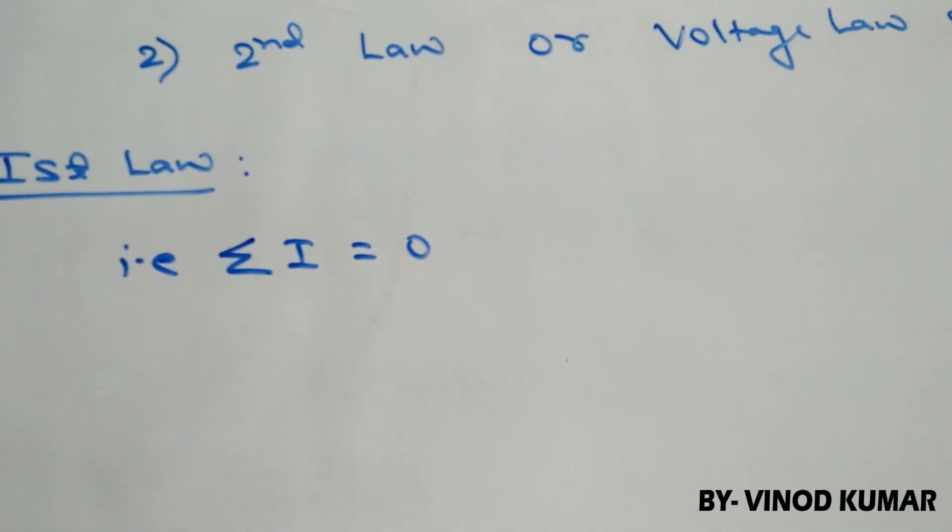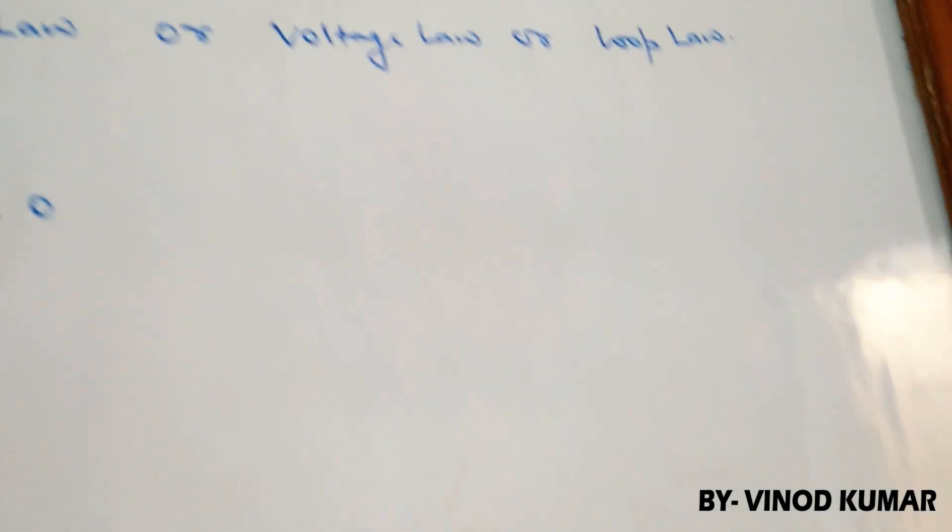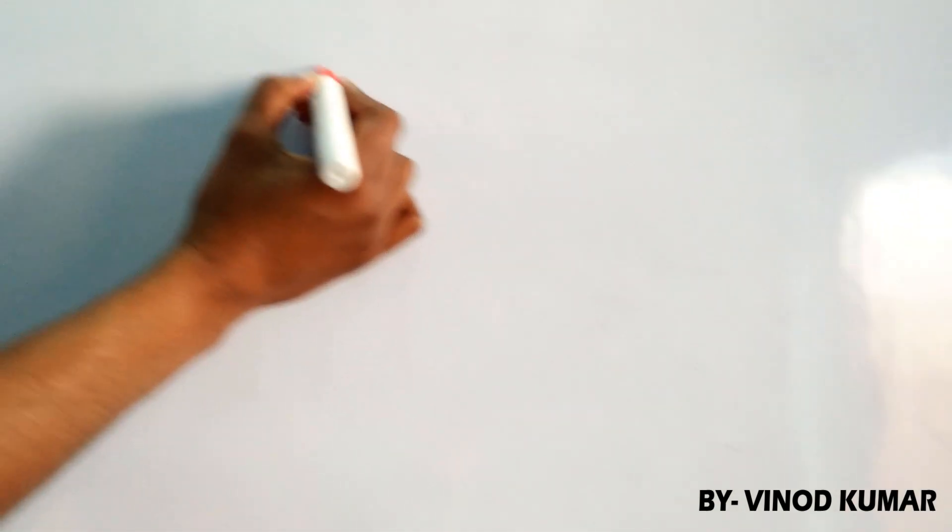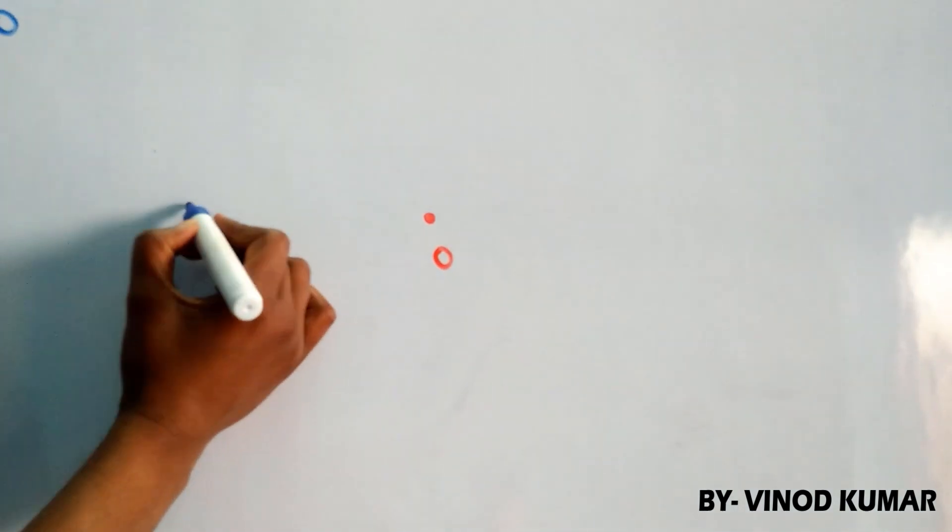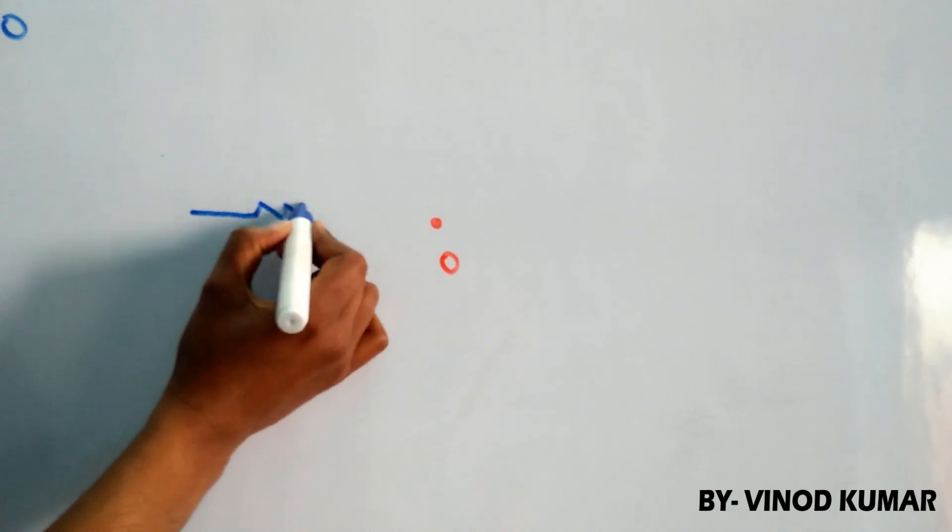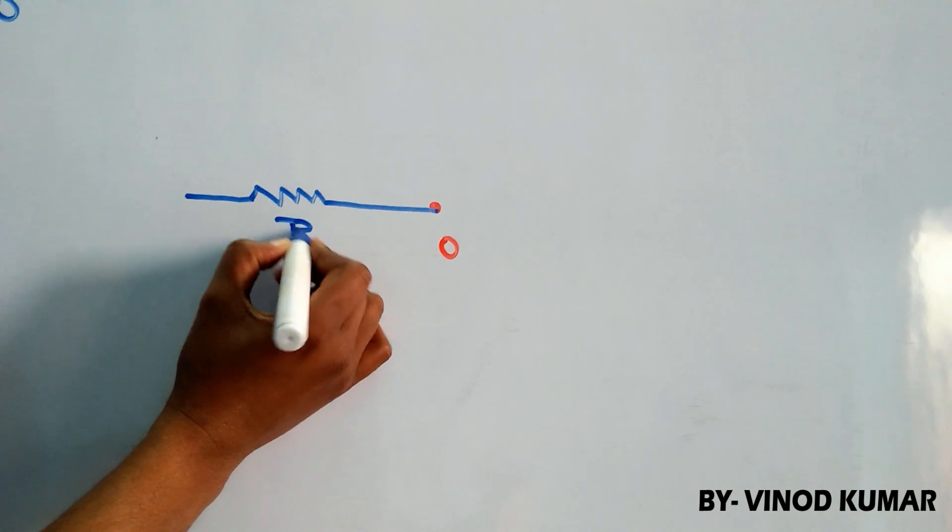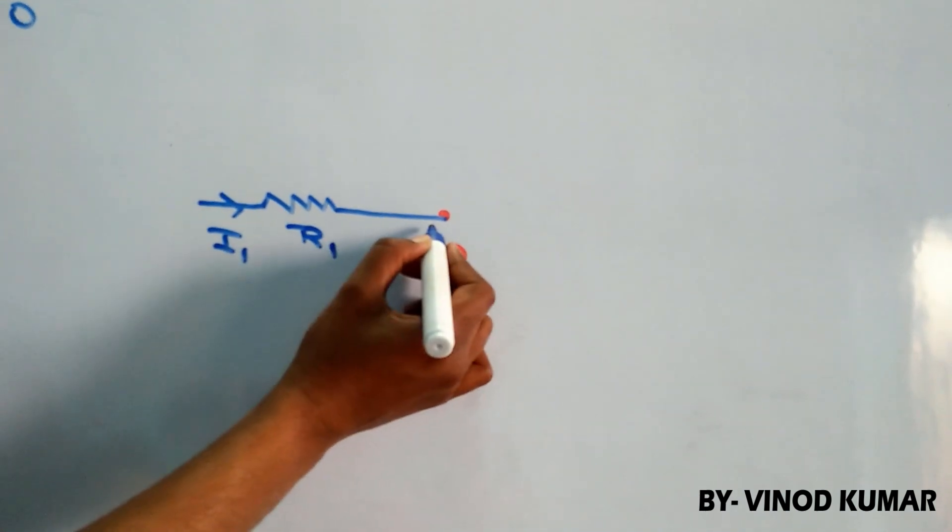Let us see. I am just taking an example to clear this law. I will first draw a simple electrical circuit. This point O is called a junction from where different branches are there. Suppose this one is R1 resistance and I1 current is flowing towards the junction.